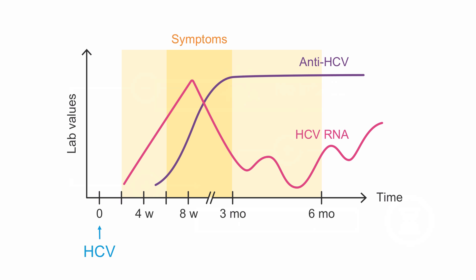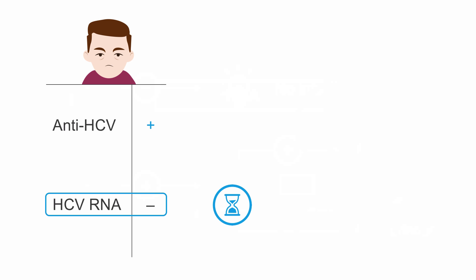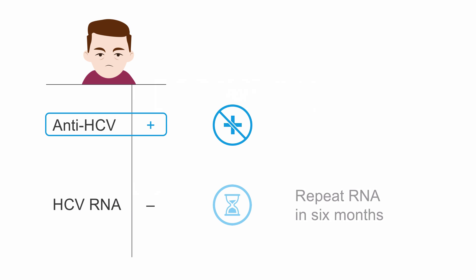Remember, RNA levels fluctuate in chronic courses. By definition, this is not a false negative result — it is just a possibility in the pathophysiological course of a chronic infection. In order to exclude a possible chronic infection, it is recommended to repeat testing 6 months later. The second possibility could be a false positive anti-HCV.